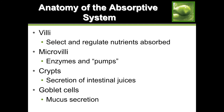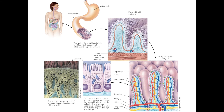The anatomy of the absorption system: you have villi, which select and regulate nutrients absorbed in the small intestine. Then you have microvilli on your individual cells, which contain enzymes and pumps. You have crypts which secrete intestinal juices, and goblet cells which secrete mucus. Mucus is important for a nice movement of digested food.